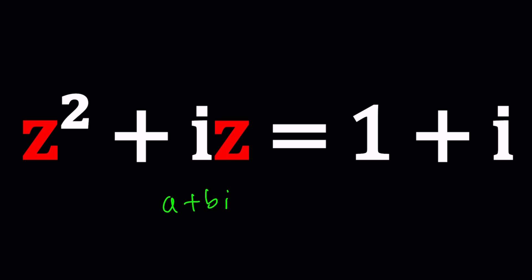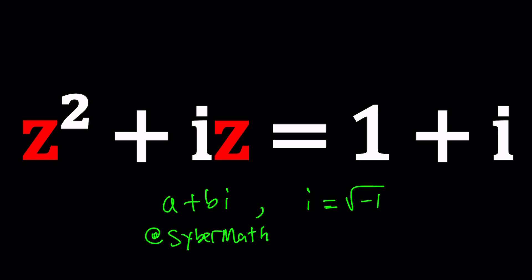What is a complex number? A complex number can be written as a plus bi, where a and b are real numbers and i is the square root of negative one. If you wanted more information or if you're new to complex numbers, go ahead and check out my lecture videos. I also have another channel called CyberMath — maybe that's where you came from. If you did, let us know in the comment section down below.